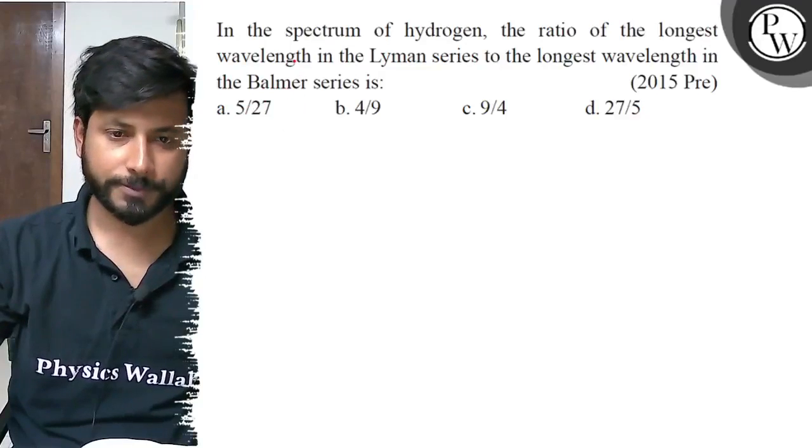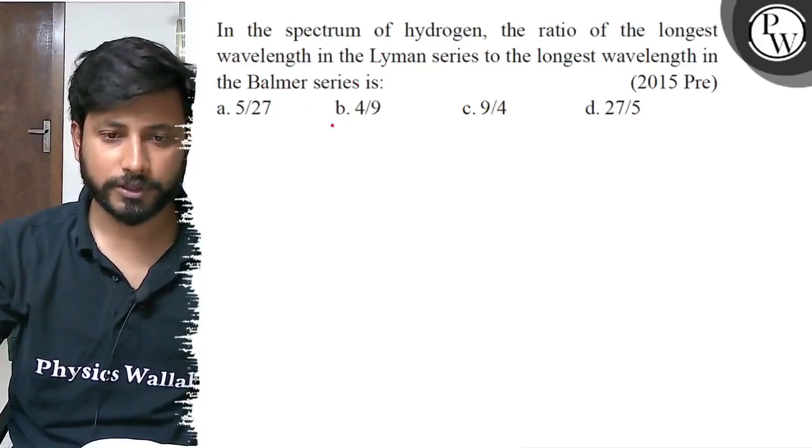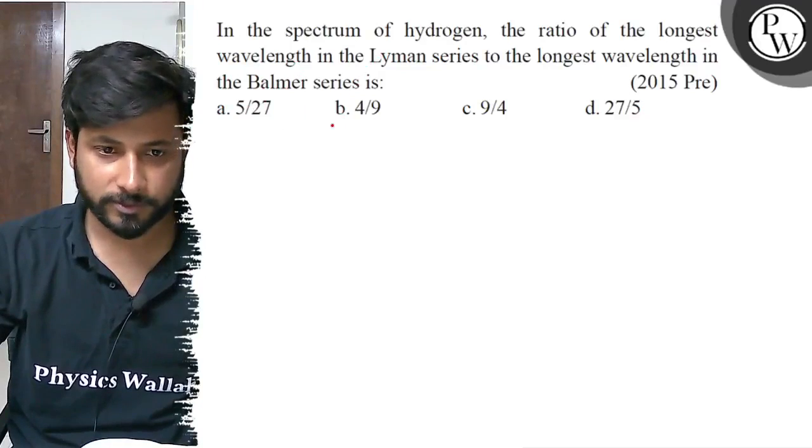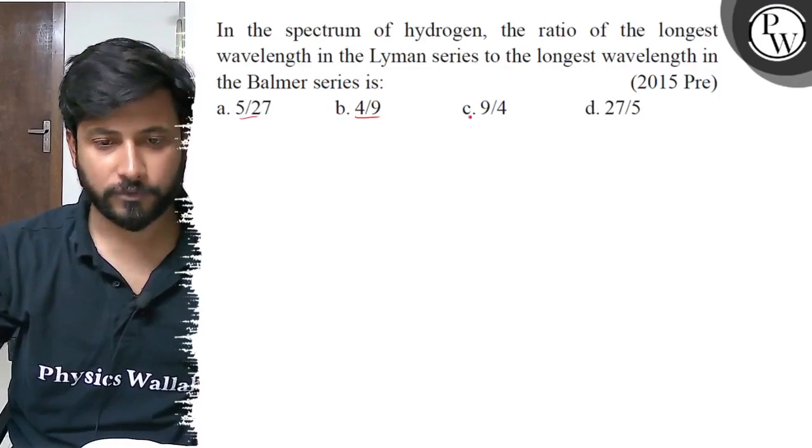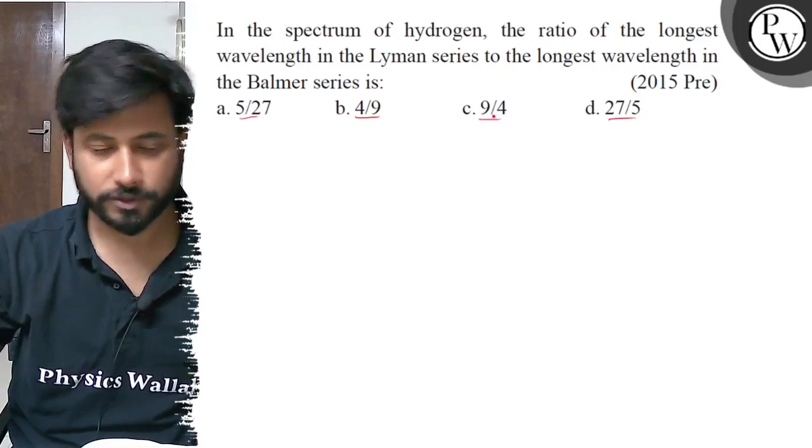Hello everyone, let us see this question. In the spectrum of hydrogen, the ratio of longest wavelength of Lyman series to longest wavelength in Balmer series. Option A: 5 by 27, B: 4 by 9, C: 9 by 4, D: 27 by 5.